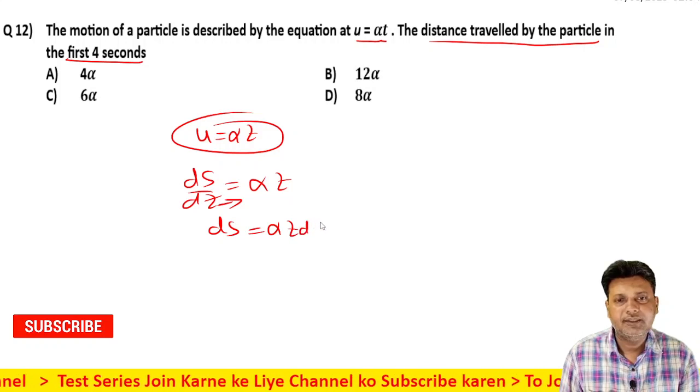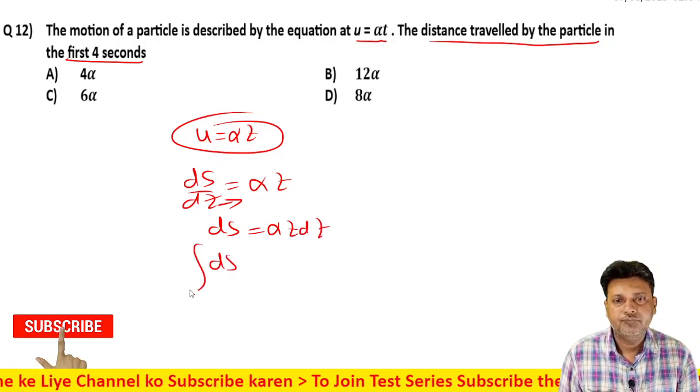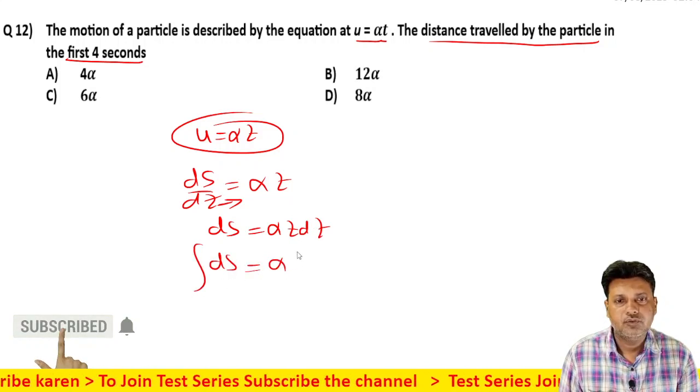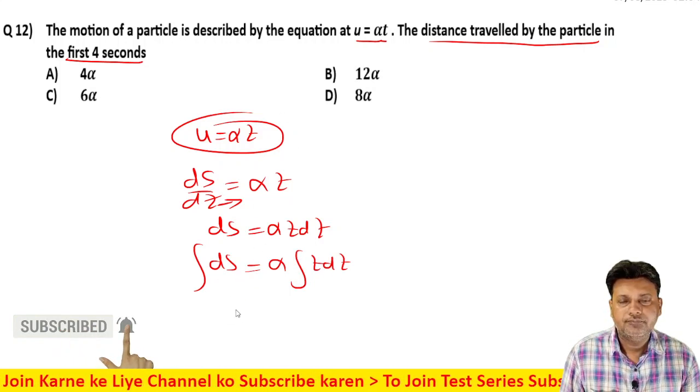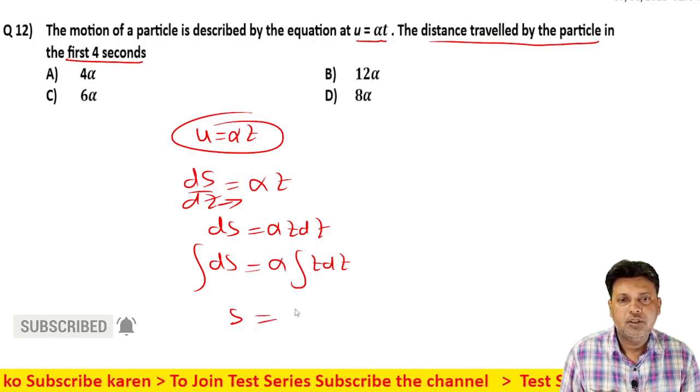ds equals alpha t dt. Integrate both sides. Alpha is constant, so integrating t dt gives s equals alpha t square by 2.